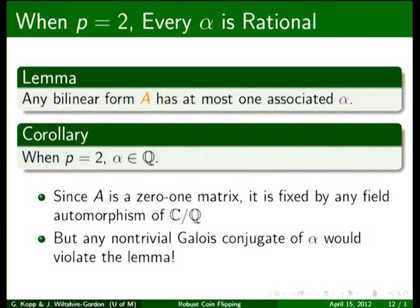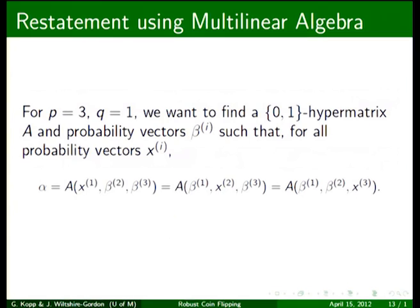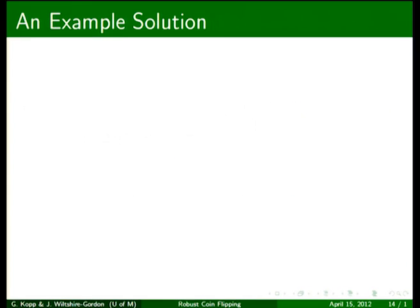So I'd like to point out that just by changing our formalism to talk about bilinear forms, we get a decent amount of mileage. And it's all very easy to show. So I'd like to follow through with the promise I had in the philosophy slide and recast the whole problem in terms of multilinear algebra, not just bilinear forms. So here I've done the case where Alice has three sources and one of them may be faulty. The question becomes, can we find a zero-one hypermatrix and probability vectors beta i such that the probability is alpha even if we use the wrong distribution in any coordinate?